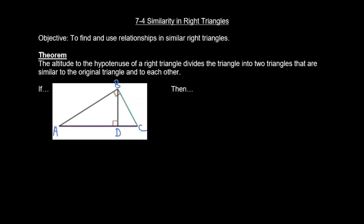Welcome, Cherubs. We're working with section 7.4, similarity in right triangles. We are going to kick off with this first theorem, which says the altitude to the hypotenuse of a right triangle divides the triangle into two triangles that are similar to the original triangle and also to each other.